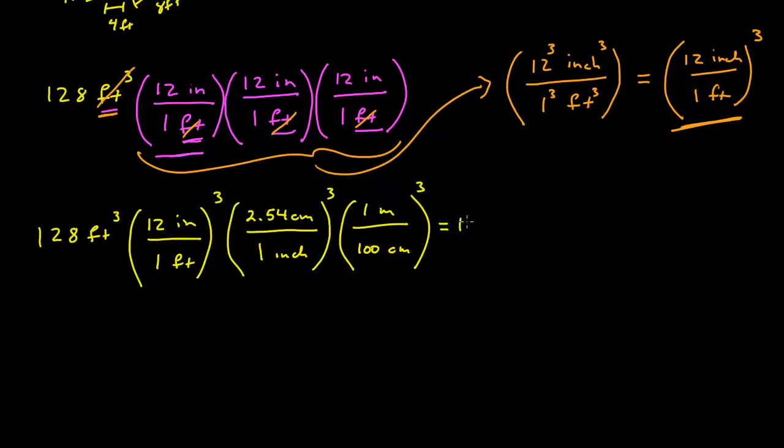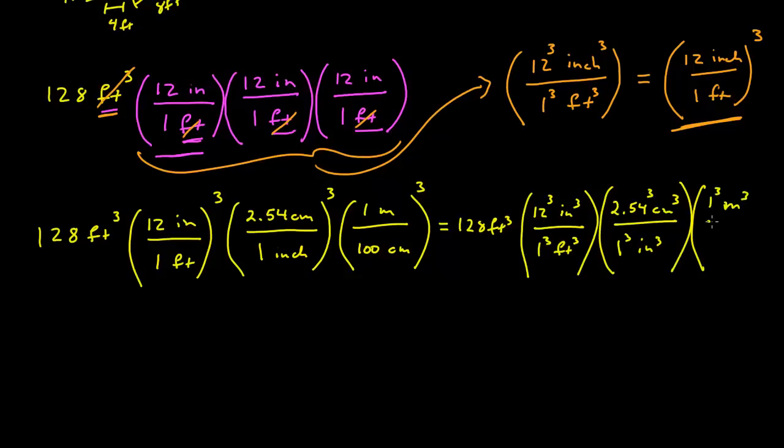And if I just, let's just go 128 feet cubed. If I go through the whole thing, just to make sure I don't forget anything, this would be 12 cubed, inches cubed, over 1 cubed, foot cubed, 2.54 cubed, centimeters cubed, 1 cubed, inch cubed, 1 cubed.